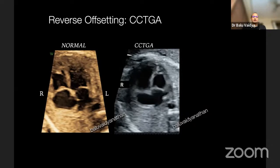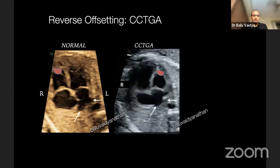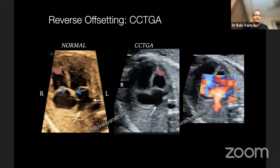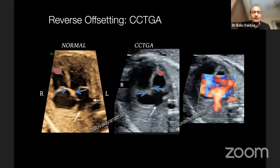The pulmonary veins are draining into the left-sided atrium, but there is atrioventricular discordance. In CCTGA, the tricuspid valve is left-sided and the mitral valve is right-sided. Normally the right ventricle is right-sided, but here the right ventricle is left-sided. Normally you find the offsetting with the tricuspid valve at the lower level on the right side, but here you see reverse offsetting — the right-sided valve is at a higher level, the left-sided valve at a lower level. The atria are normal here — the LA receives pulmonary veins — but the AV valves have become reversed. That is why the mitral valve is at a higher level and the ventricles are also reversed. This is atrioventricular discordance found in CCTGA.